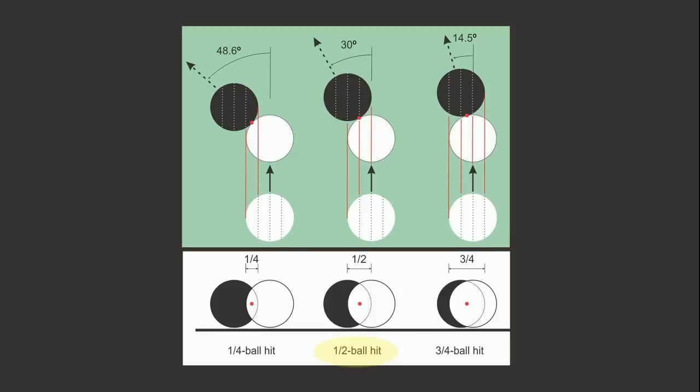With a half ball hit, the cue ball overlaps one-half of the object ball and the center of the cue ball is aimed exactly at the edge of the object ball. This center-to-edge alignment makes a half ball hit very easy to visualize and aim. The result is a 30-degree cut angle.